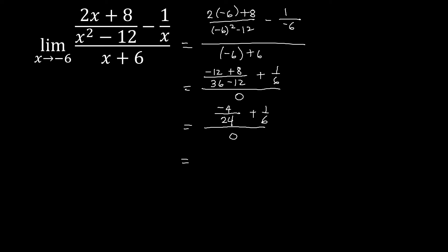Negative 4 over 24 — we have a common factor of 4, so we divide: negative 4 divided by 4 is negative 1, and 24 divided by 4 is 6. So we have negative 1 over 6 plus 1 over 6, all over 0. This leads to 0 over 0, which is indeterminate. So we can try to manipulate something on our function.